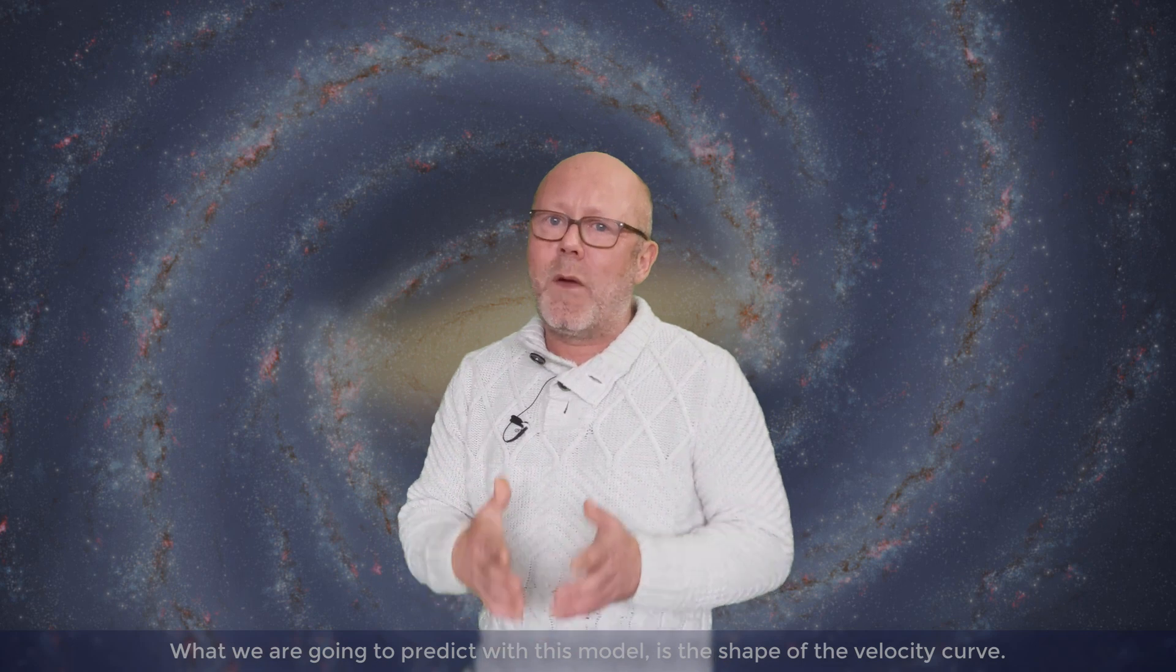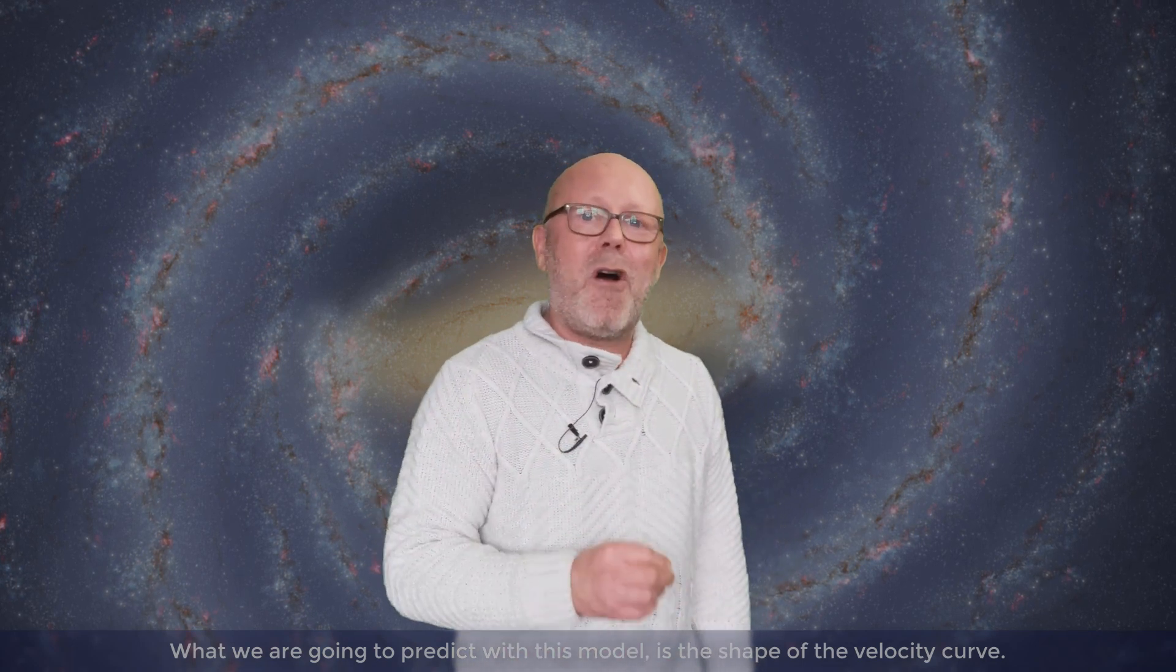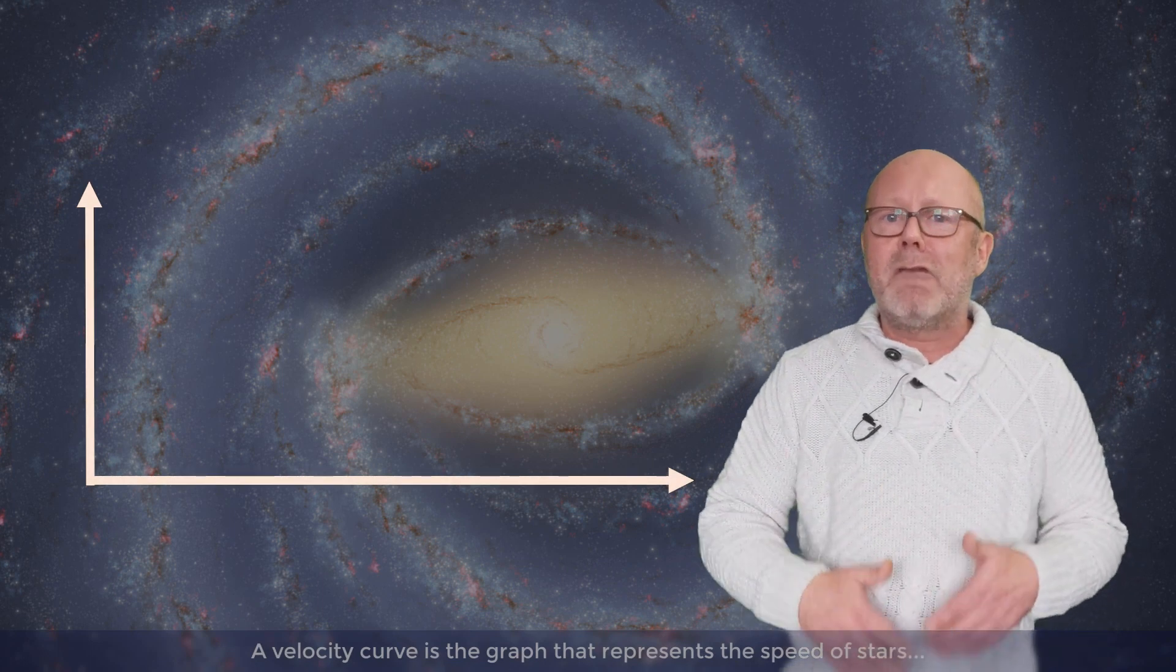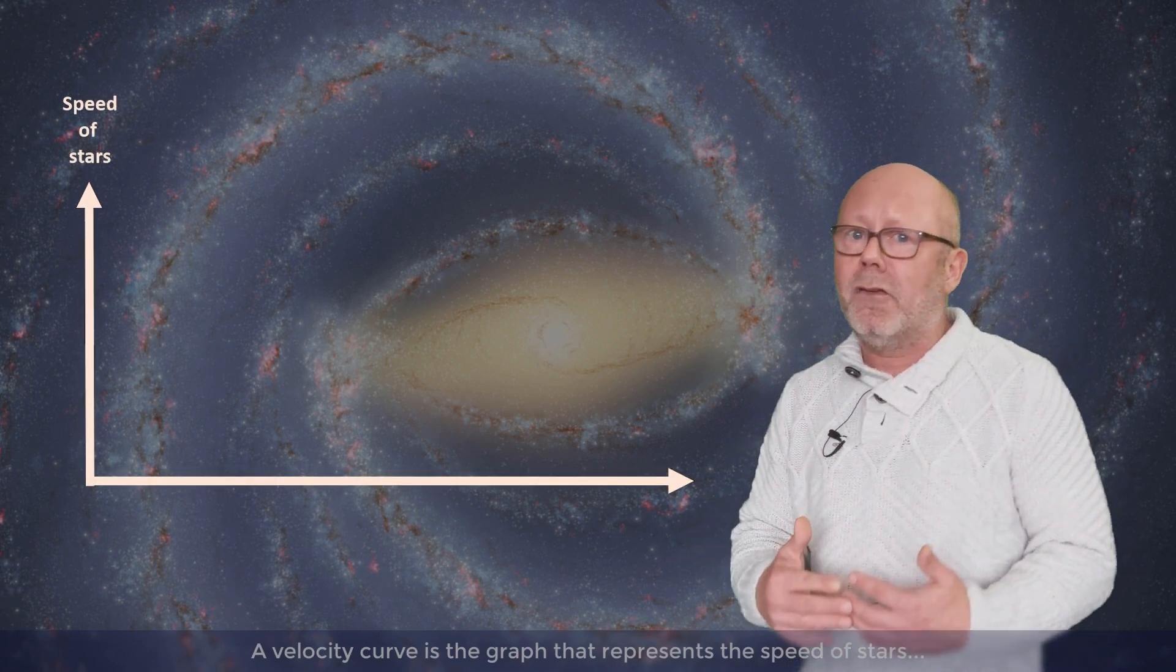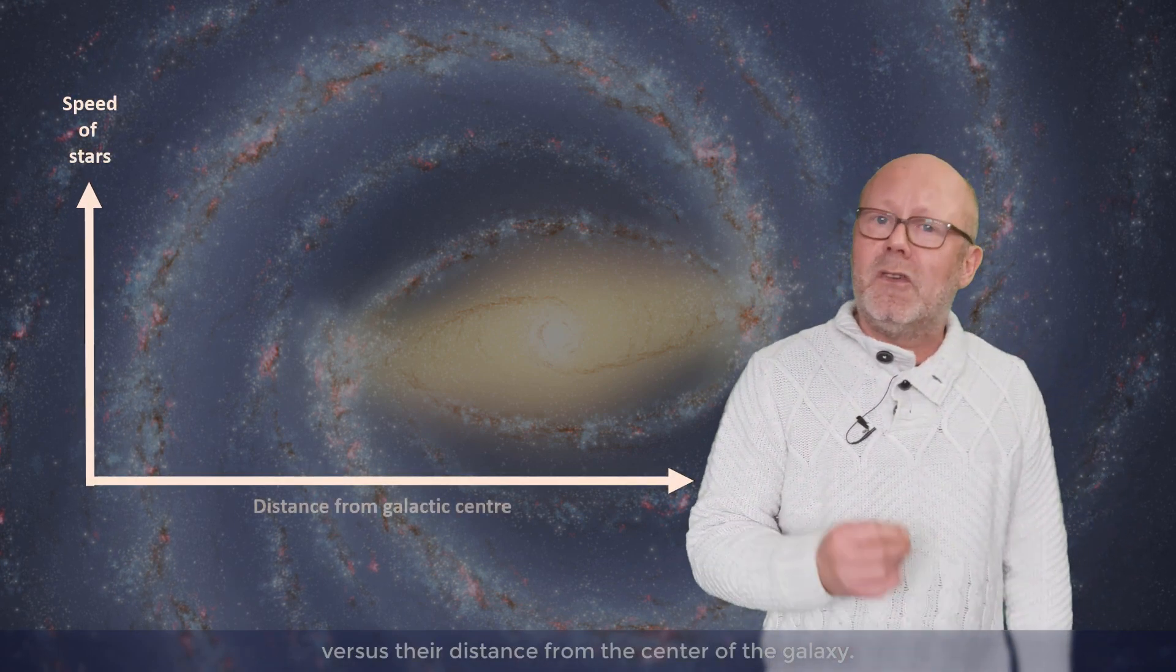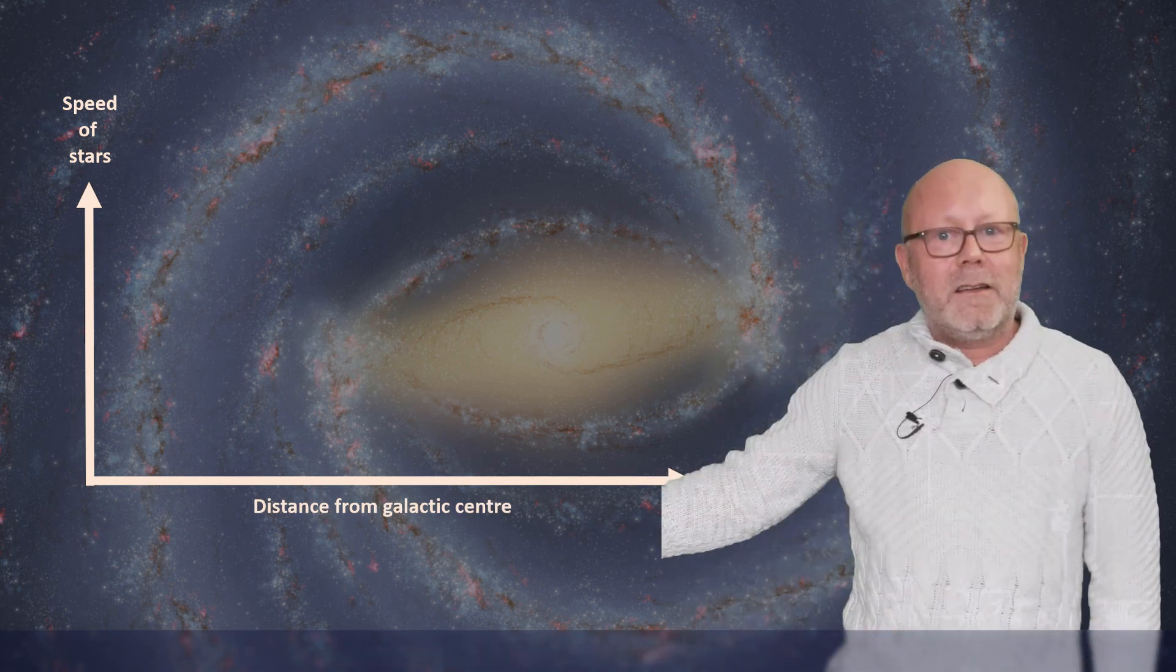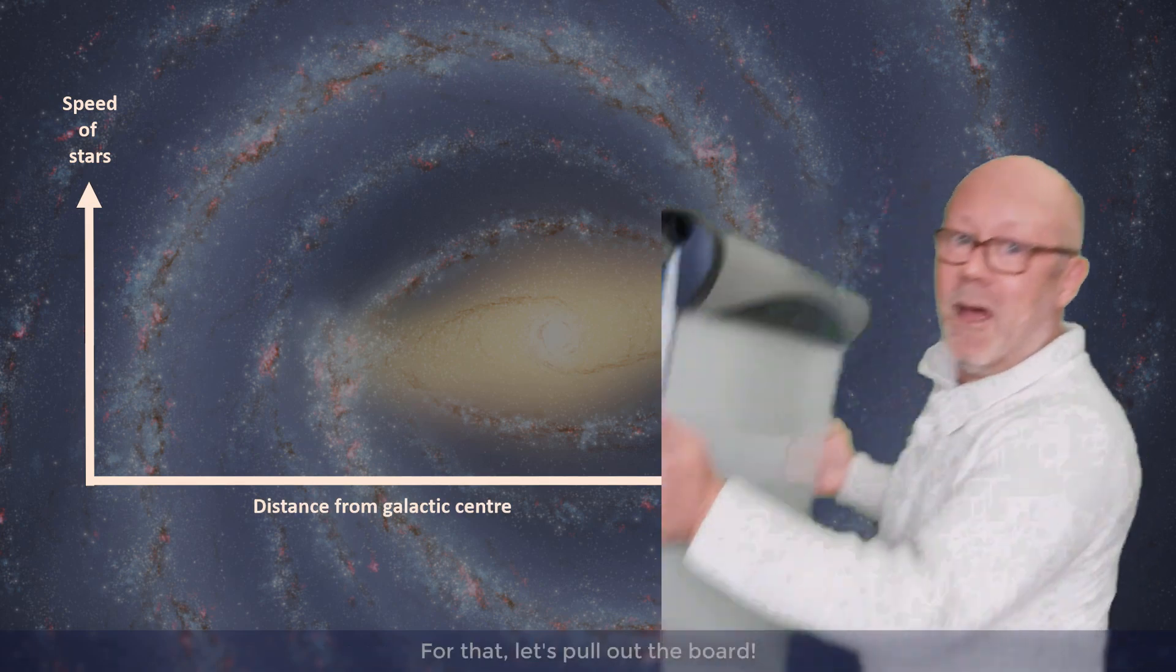What we are going to predict with this model is the shape of the velocity curve. A velocity curve is a graph that represents the speed of stars versus their distance from the center of a galaxy. For that, let's pull out the board.